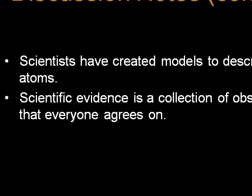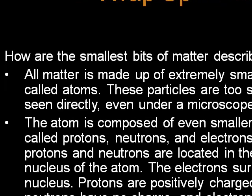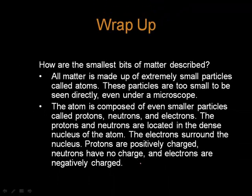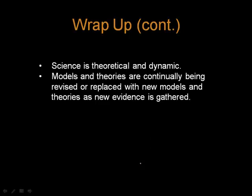Scientists have created models to describe these atoms, and there's evidence that is based on the collections of observations that everyone agrees on. When we talk about the smallest bits of matter, all matter is made up of extremely small particles called atoms. Atoms are too small to be seen directly, even with a microscope. The atom is composed of protons, neutrons, and electrons. Protons are in the dense nucleus of the atom, and then the electrons are outside of that dense nucleus called the electron cloud. Protons are positively charged, neutrons have no charge, and electrons are negatively charged.